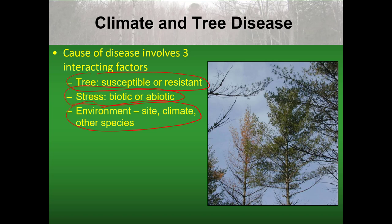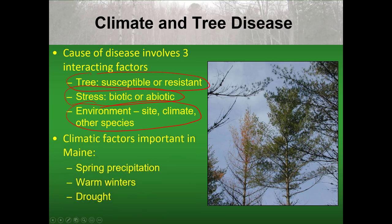What we'll be talking about in this presentation are specific climatic factors that are important in Maine dealing with tree disease, and those involve spring precipitation, warm winters, and droughts.